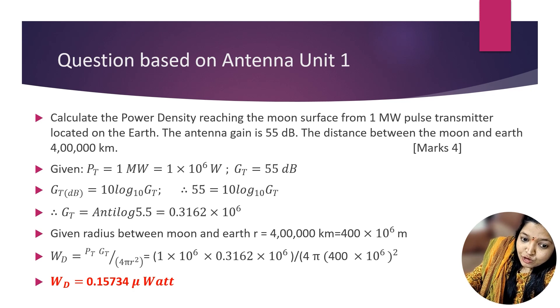Putting the values of PT, GT, and r, we get the answer 0.15734 microwatt. To solve this numerical, the important formula is power density WD = (PT × GT)/(4πr²). This entire solution is for 4 marks.